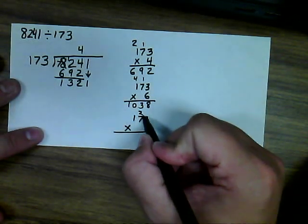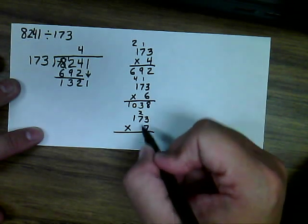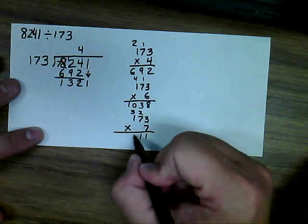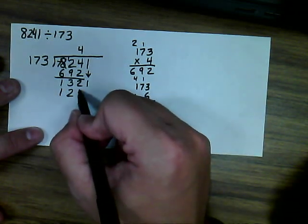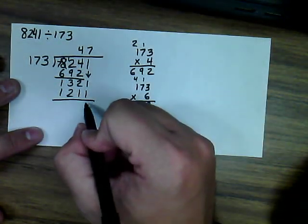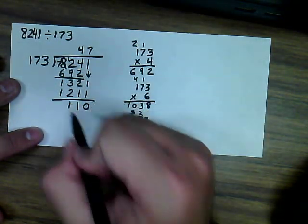7 times 3 is 21. 7 times 7 is 49, plus the 2 is 51. And 1 times 7 is 7, plus the 5 is 12, giving us 1,211. We use the 7. You can see that there will be a remainder here, and a remainder is 110.